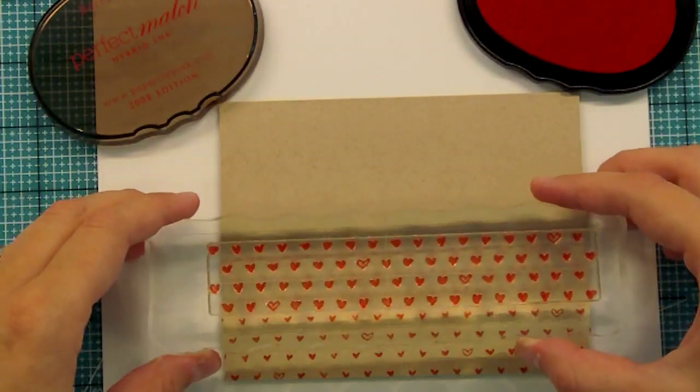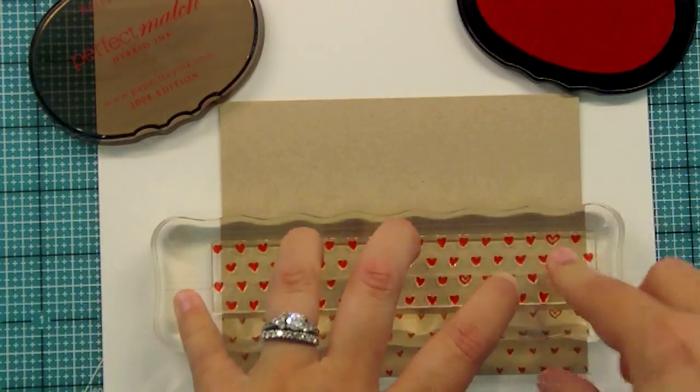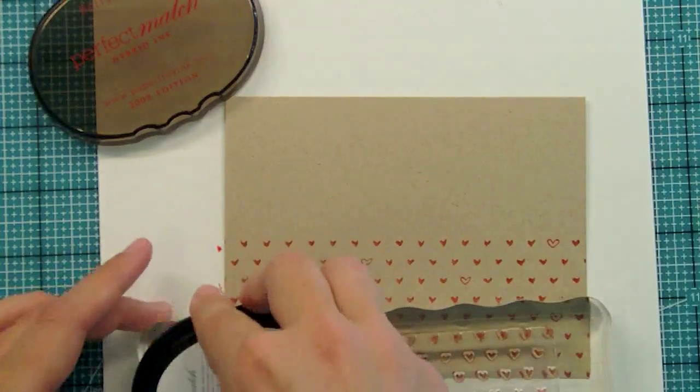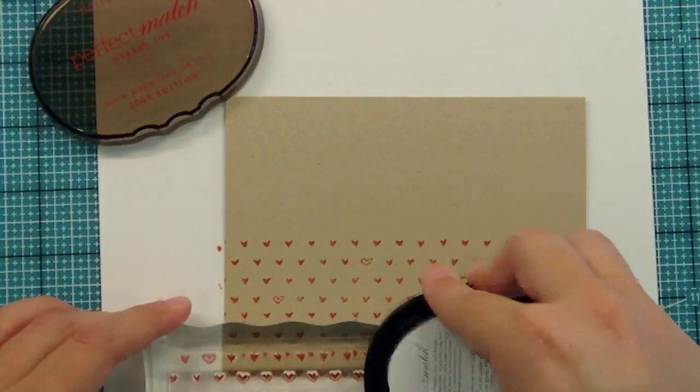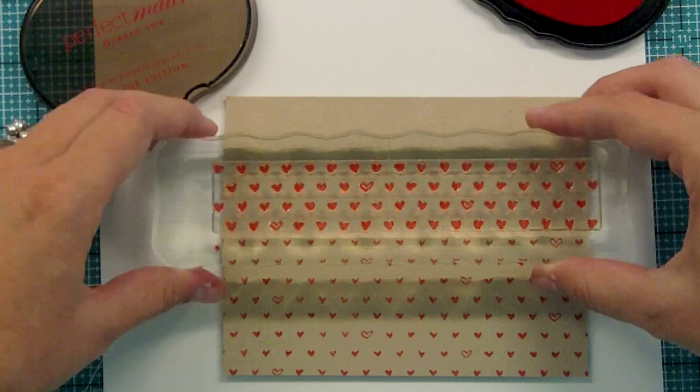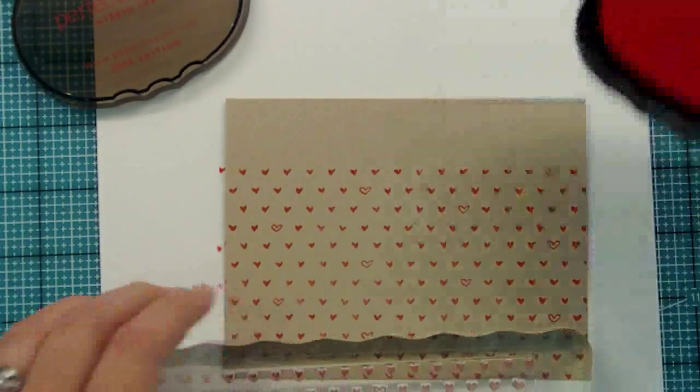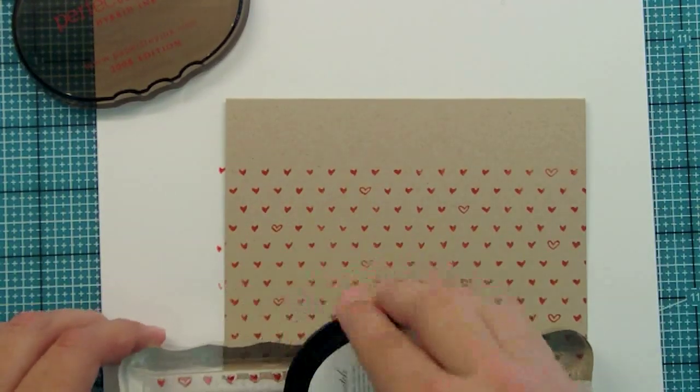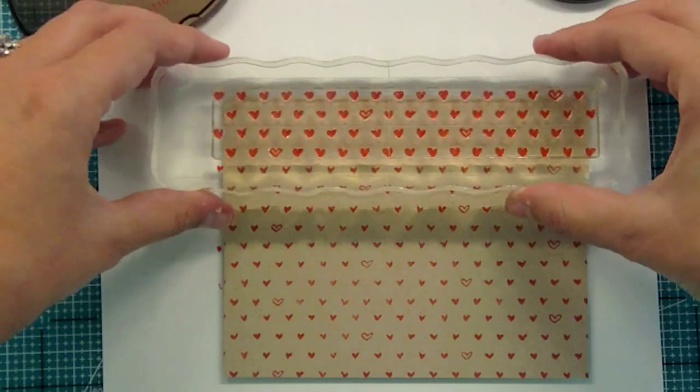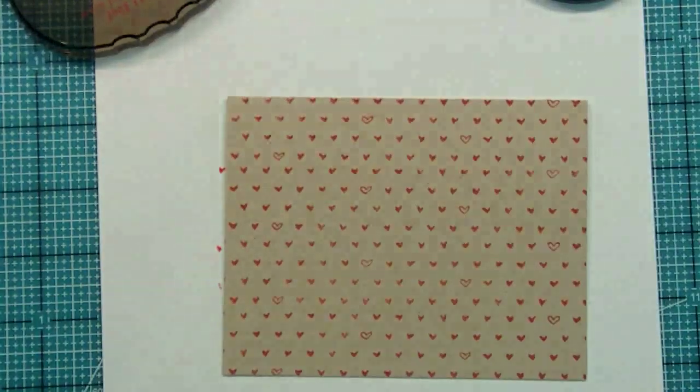I'm just going to ink this up again and line it up. When you do it, make sure you put pressure on the outsides and the middle because this is a very long stamp. You just line it up, and they're whimsical hearts, so you don't even have to worry about the perfect look. If the outsides didn't line up perfectly, you can always trim off the sides. We covered a whole front of a card that quickly.